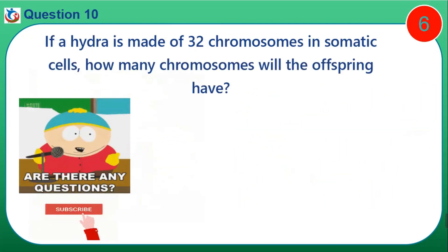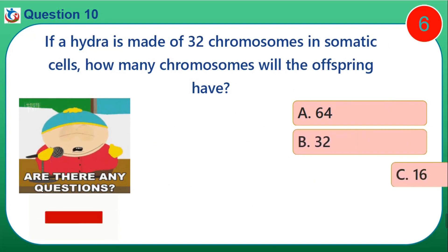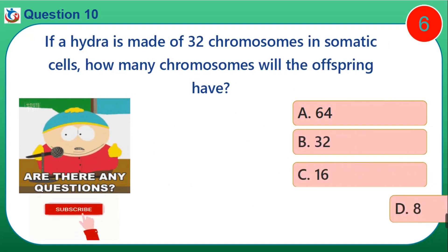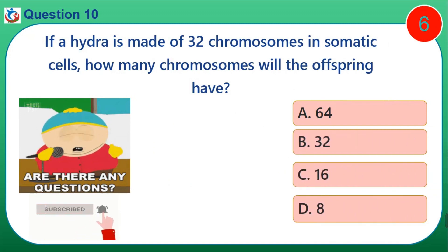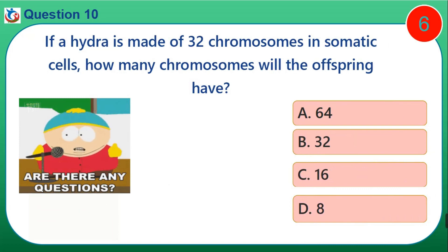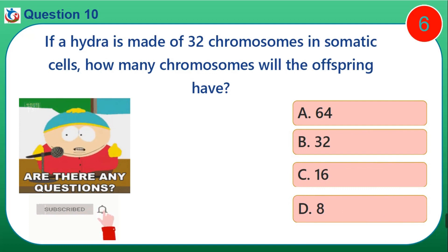Question 10. If a hydra is made of 32 chromosomes in somatic cells, how many chromosomes will the offspring have? A. 64. B. 32. C. 16. D. 8.